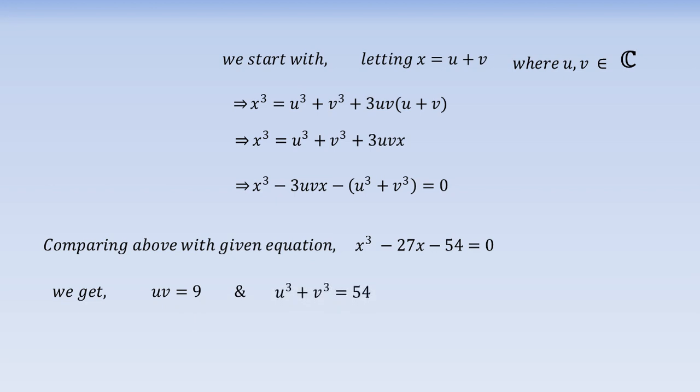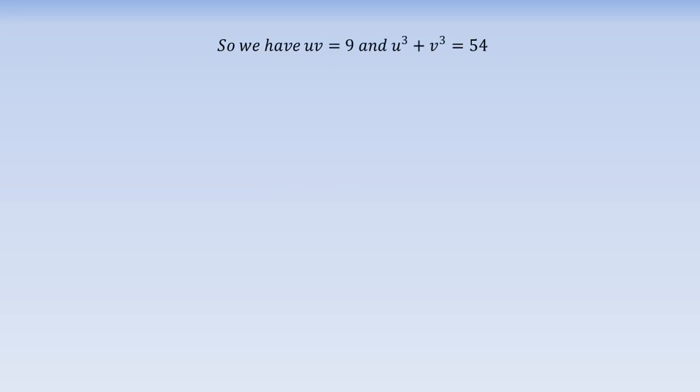Now we will solve for u and v. So far we have obtained uv = 9 and u³ + v³ = 54. Substituting v = 9/u in the second equation, we obtain a quadratic equation in u³.